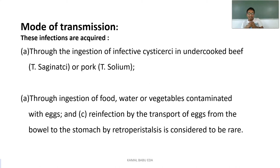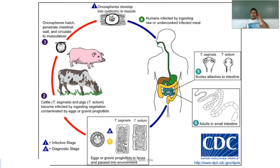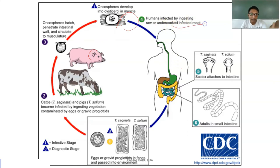Most commonly, infection occurs through eating undercooked beef or undercooked pork. Consuming raw beef results in Taenia saginata infection, while consuming raw pork results in Taenia solium infection, depending on the intermediate host involved. When a person ingests raw or undercooked meat, Taenia solium or Taenia saginata attaches to the small intestine, where further development takes place.